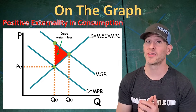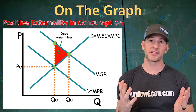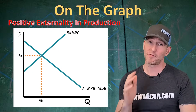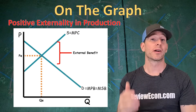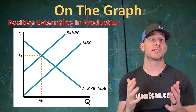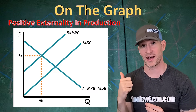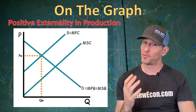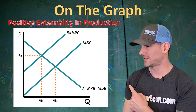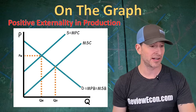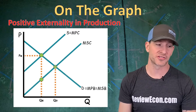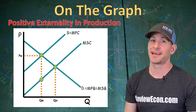There is another way of graphing positive externalities — those caused by the production of a product. When we graph a positive externality in production, we subtract that external benefit from the supply curve to give us a lower marginal social cost curve. Because there are external benefits resulting from production, it gives us a lower marginal social cost. The allocatively efficient quantity is again where marginal social benefit equals marginal social cost, labeled QO, and once again we have deadweight loss found using the market quantity, the marginal social cost curve, the marginal social benefit curve, and the intersection of the two.